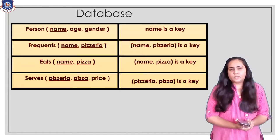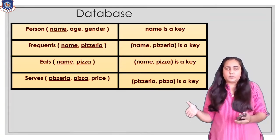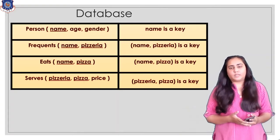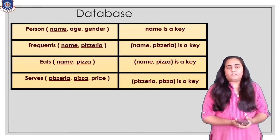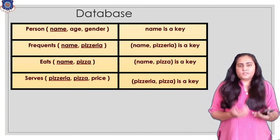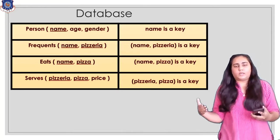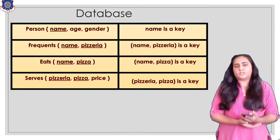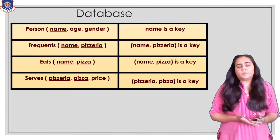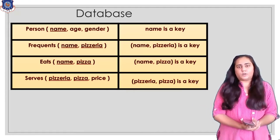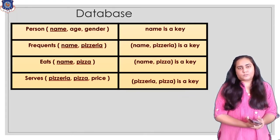The next table is eats. This shows the name of the person and the pizza that is eaten by that person, and here the combination of name and pizza together forms a primary key. Then we have the serves table, which shows which pizzeria is selling which type of pizza and at what price. It has pizzeria and pizza as a primary key. So these are the four tables in our database and their primary keys.